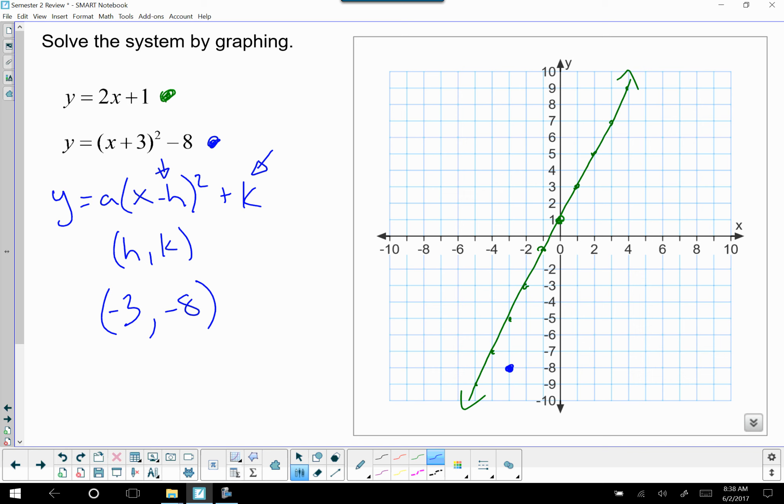From here, we're just going to go out from there, picking some values. We could pick a value like negative 2, and negative 2 plus 3 is 1, 1 squared is 1, and 1 minus 8 is negative 7. So at negative 2, we're at negative 7, its corresponding axis of symmetry point would be negative 4.